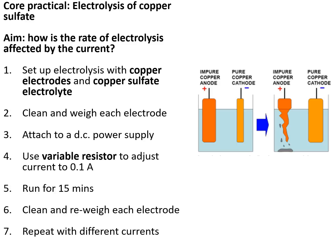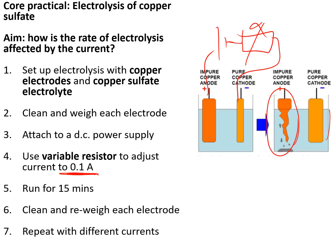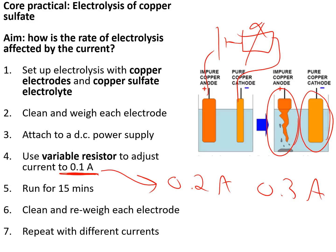The core practical investigated how the rate of electrolysis is affected by current. We set up an electrolytic cell with copper electrodes and copper sulfate electrolyte, connected to a power supply and a variable resistor. We cleaned and weighed each electrode, adjusted the current to 0.1 amps, left it for 15 minutes, then cleaned and re-weighed each electrode. The anode lost mass and the cathode gained mass. We repeated the experiment four or five times at different currents — 0.2 amps, 0.3 amps, and so on — and found that the greater the current, the greater the decrease in mass of the anode and the greater the increase in mass of the cathode.